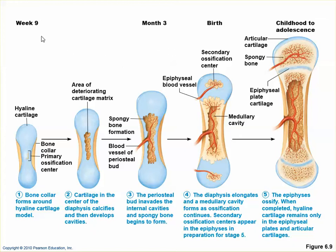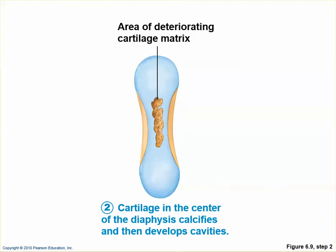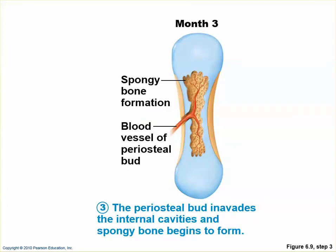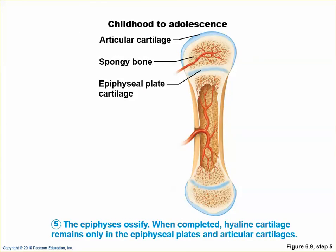Looking at the developmental chart, this process starts around week nine of gestation, with further stages at month three, then at birth and childhood — though timing varies from bone to bone. To summarize: a collar of bone forms, the primary ossification center develops in the center as cartilage loses nutrients and deteriorates, spongy bone forms, blood vessels come in to establish the diaphysis, then the epiphysis begins with secondary ossification centers, and the epiphyseal growth plate forms.